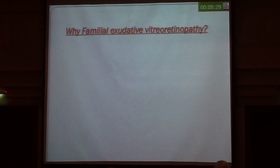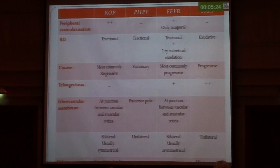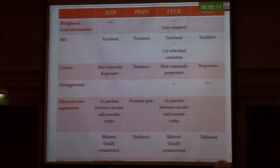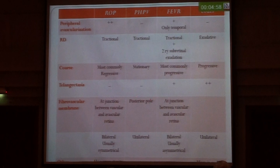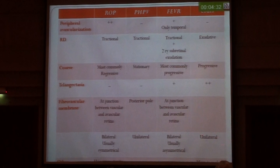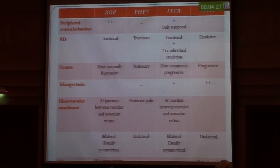This is the aspect of familial exudative vitreoretinopathy. These are the major differences between the choices. Coats disease tends to be exudative without any peripheral avascular zone and has severe telangiectasia; it's usually unilateral. PFV is usually stationary and unilateral with a fibrous stalk connecting to the posterior pole at the disc; it has no telangiectasia and no peripheral avascular area. Familial exudative vitreoretinopathy is like retinopathy of prematurity but without a history of prematurity. The peripheral avascular area is almost temporal, not in all quadrants. The retinal detachment is almost tractional, with sub-retinal exudation, and it's usually bilateral but asymmetrical. ROP tends to be symmetrical in most cases.